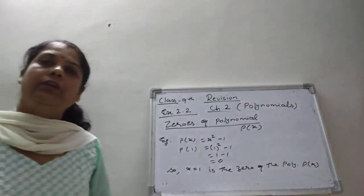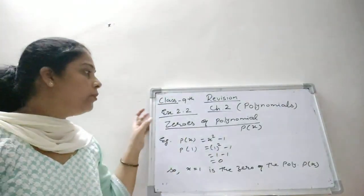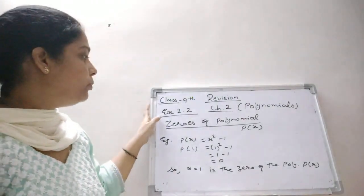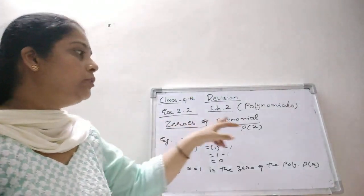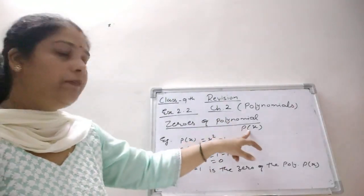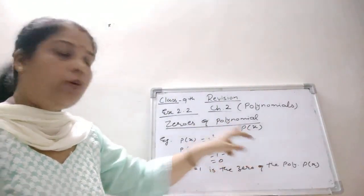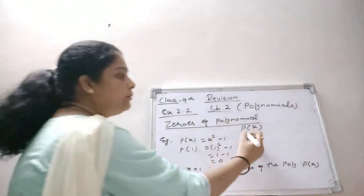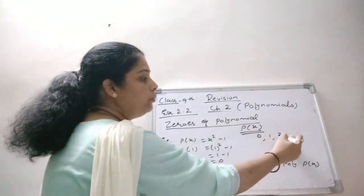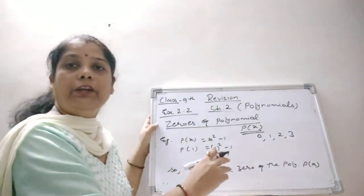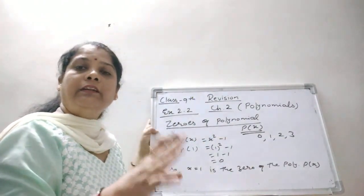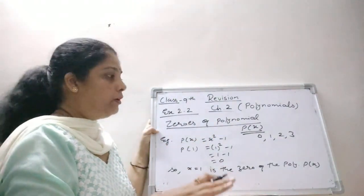Hello everyone. Today we are going to revise exercise 2.2, which is based on zeros of polynomials. What is a zero of a polynomial? If we have a polynomial P(x), and we put any value of x — like 0, 1, 2, 3 — and the answer comes out to 0, then that value is called the zero of the polynomial.